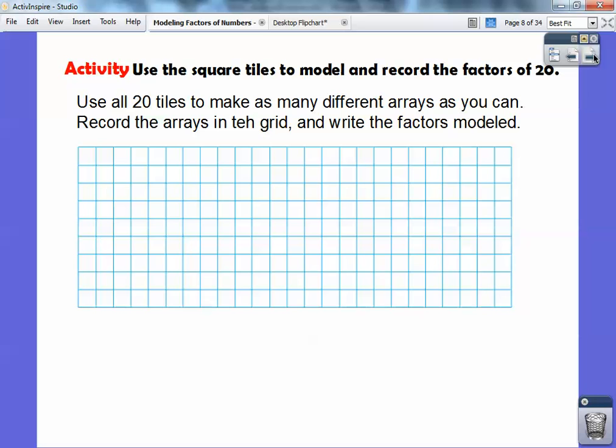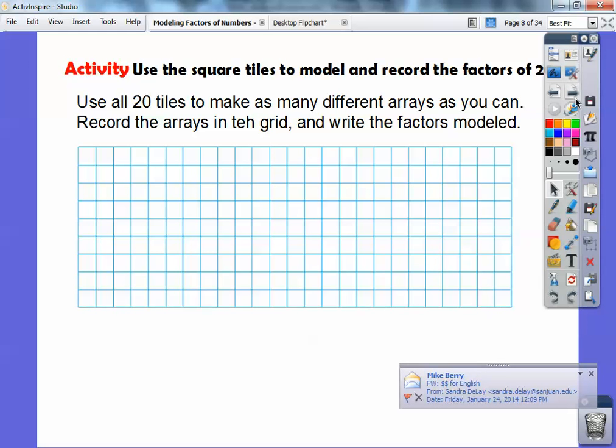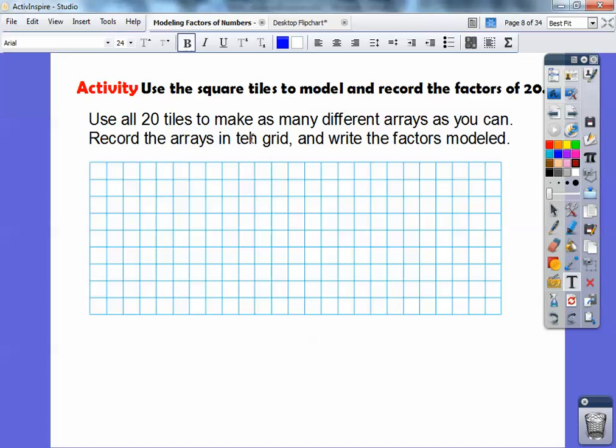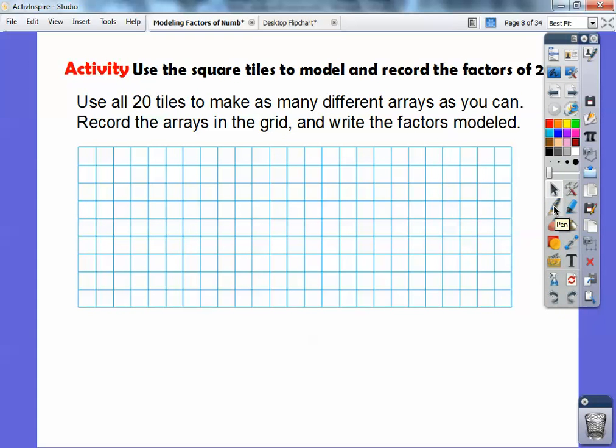So, here, we're going to use the square tiles to model and record factors of 20, okay? So, what we're going to do is use all 20 tiles and make as many different arrays as you can, okay? And record the arrays in the grid. I'm at school right now, I'm on my prep period. Alright, so we're going to record all the arrays in grids of 20 right here, 20 tiles, and we're going to write the factor models, okay?